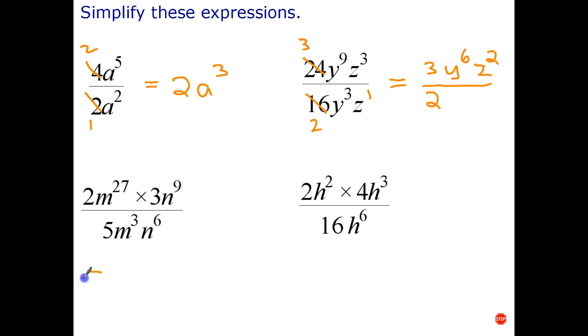Looking at this expression just here, I've got a 2 times 3 on top, which is a 6. I've got a 5 on the bottom, and I can't simplify that any further, so both of those numbers have to stay. To multiply powers with the same base. Well, these are different powers, so I can't use my index law on that, but I can do this. I can say m to the 27th divided by m cubed is m to the 27 minus 3, which is 24. And n to the power of 9 divide n to the power of 6 is n to the power of 9 minus 6, which is n to the power of 3. So this really had three questions in it. First, simplify the coefficients. Secondly, simplify the powers of m. And third, simplify the powers of n.